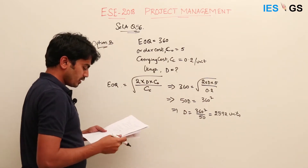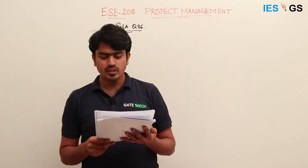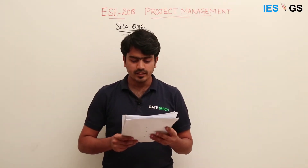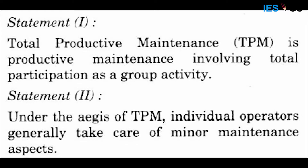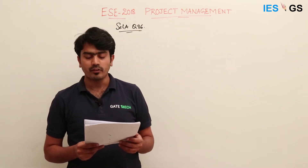The next question is number 86, based on statements. Statement one is: Total Productive Maintenance (TPM) is productive maintenance involving total participation as a group activity. Statement two is: Under TPM, individual operators generally take care of minor maintenance aspects. This is related to the manufacturing industry where TPM is a methodology to improve production operations.